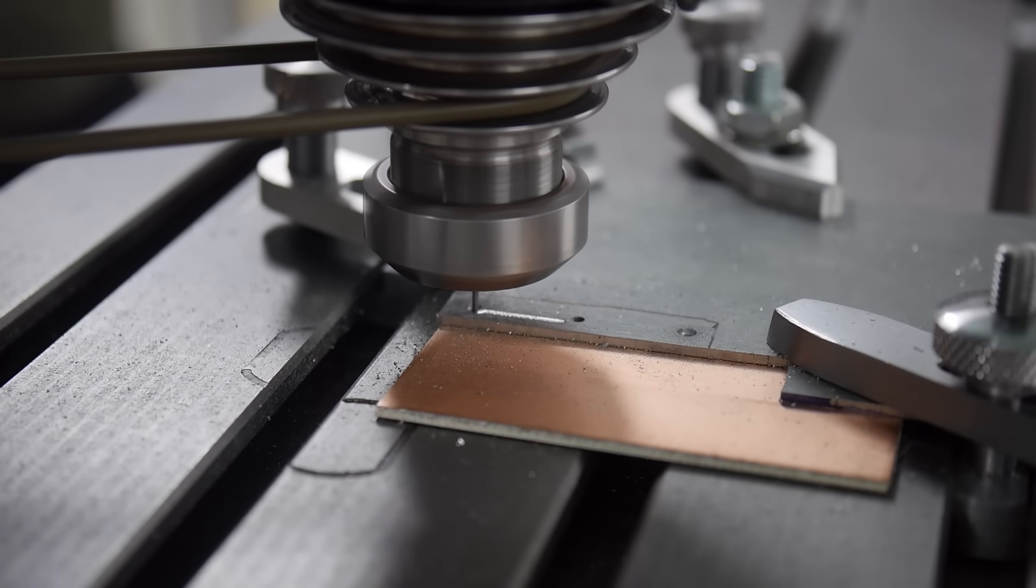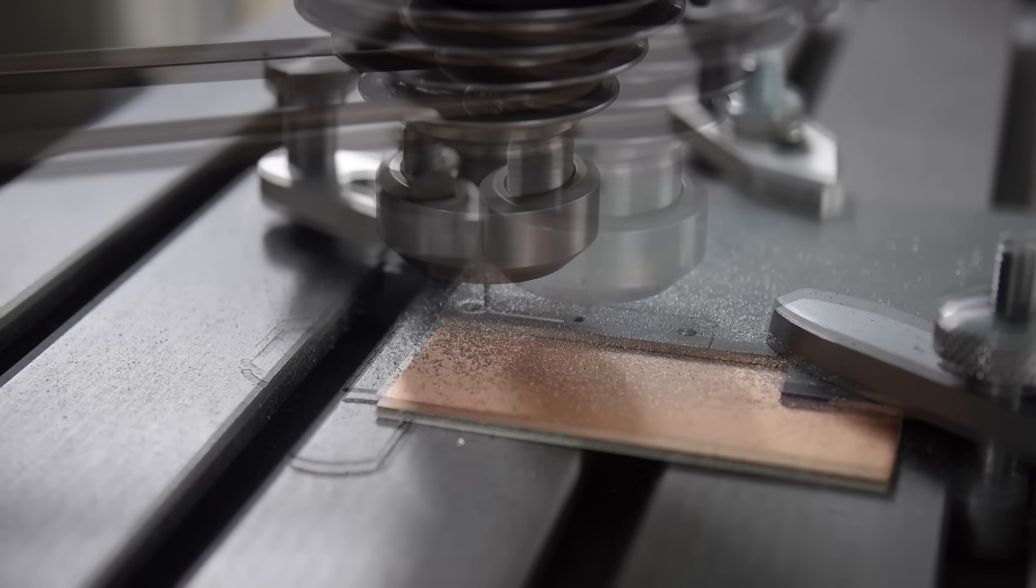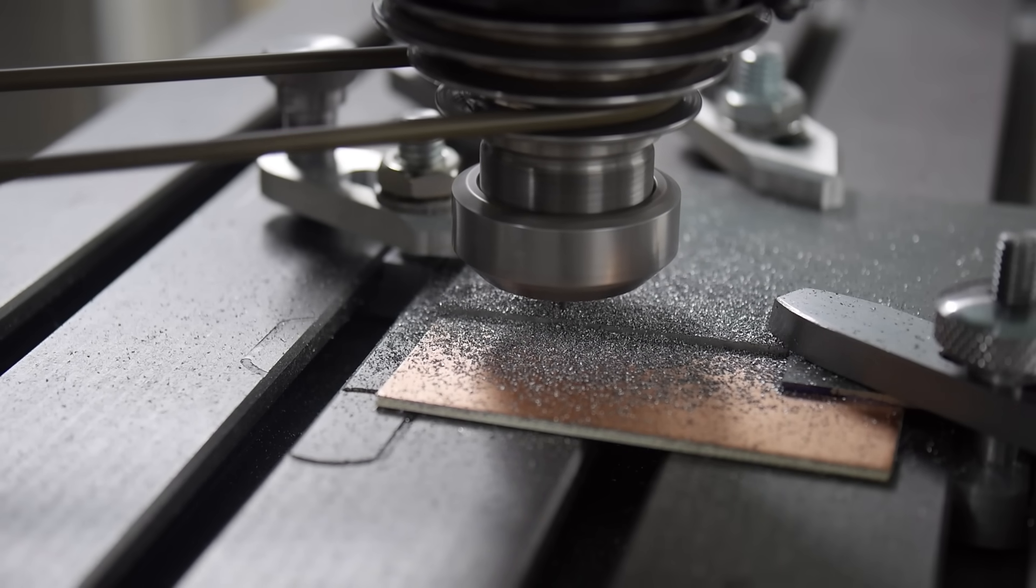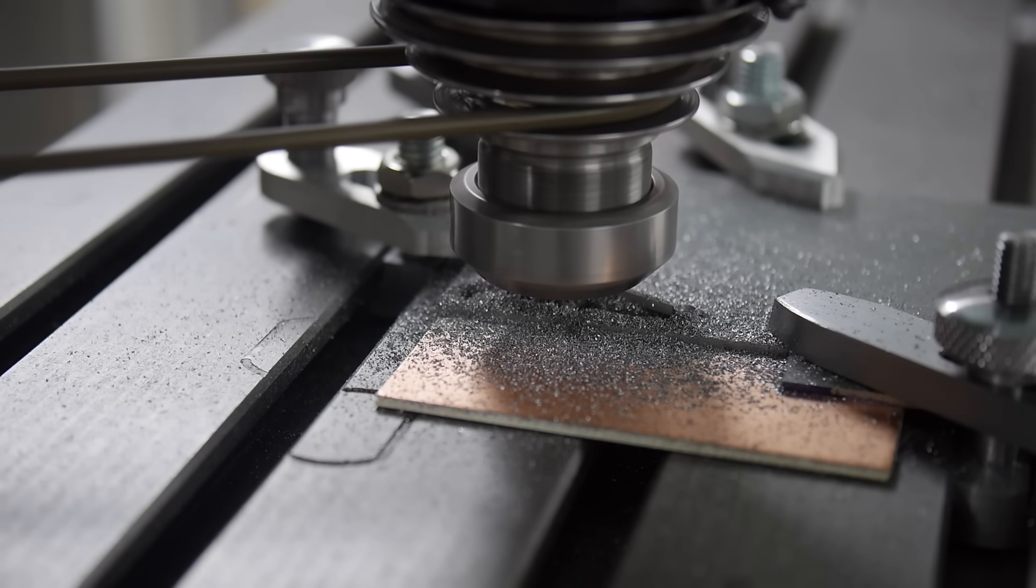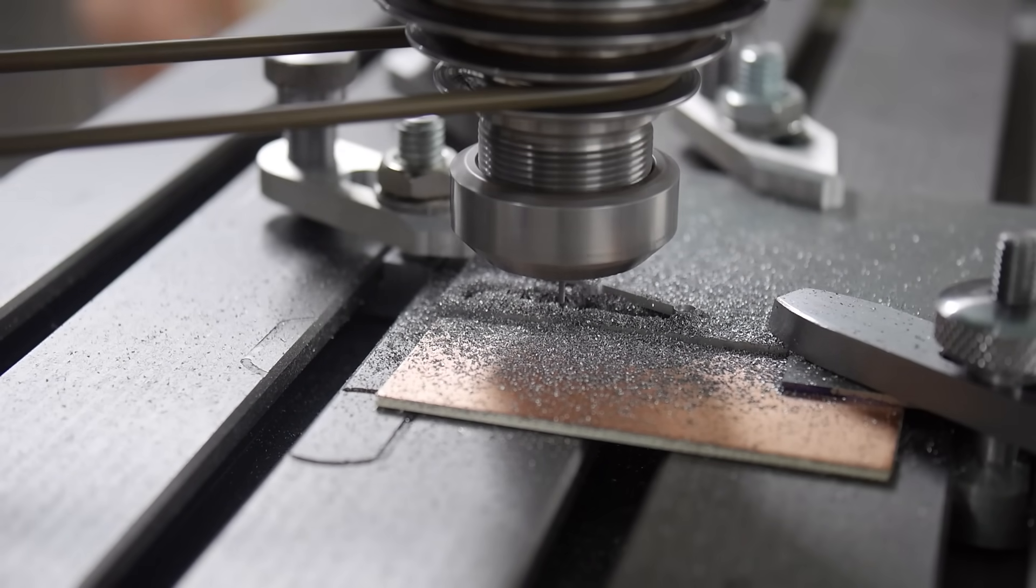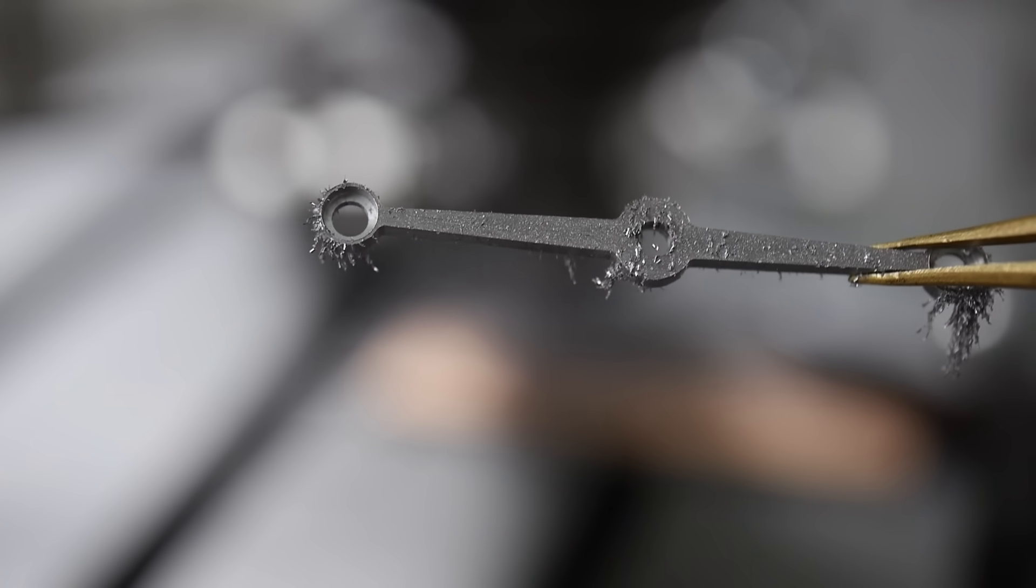As I've demonstrated in previous videos, the pantograph is a great way to machine parts like this without a CNC milling machine and is a tool I will be fully utilizing throughout this watch project. Once the holes have been drilled for the bridge and the shape formed using the pantograph, I begin the hand filing work.